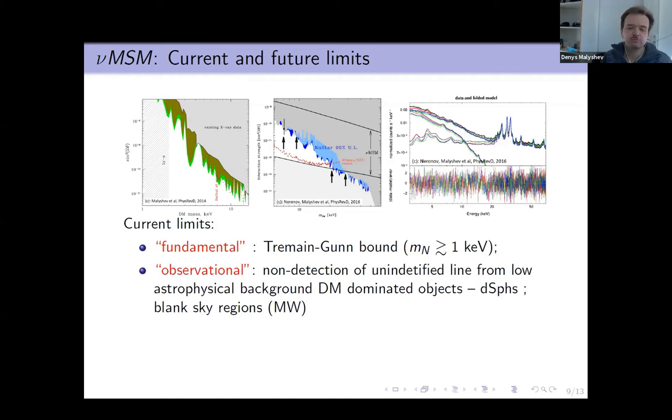Next limits are just observational, which originate from non-detection of any line from dark matter dominated objects like dwarf spheroidals or blank sky regions. The last class of constraints are constraints from early universe, which are constraints from dark matter overproduction or resonant production of dark matter which produces large element inconsistent with BBN.